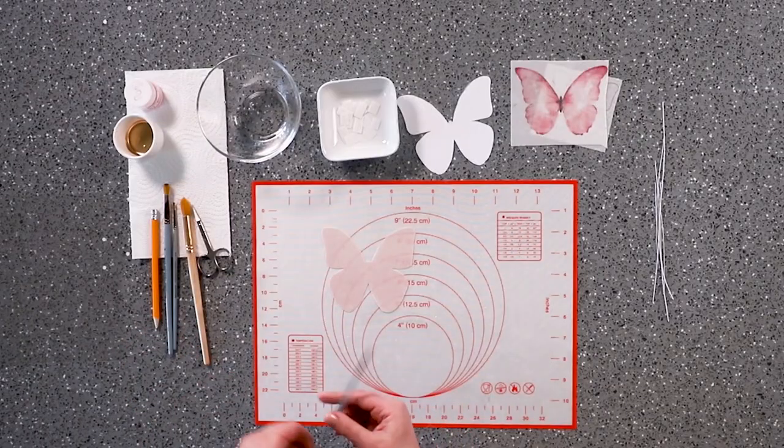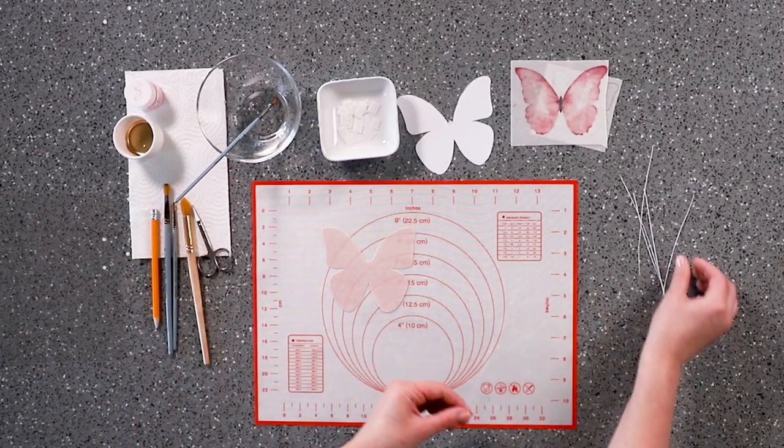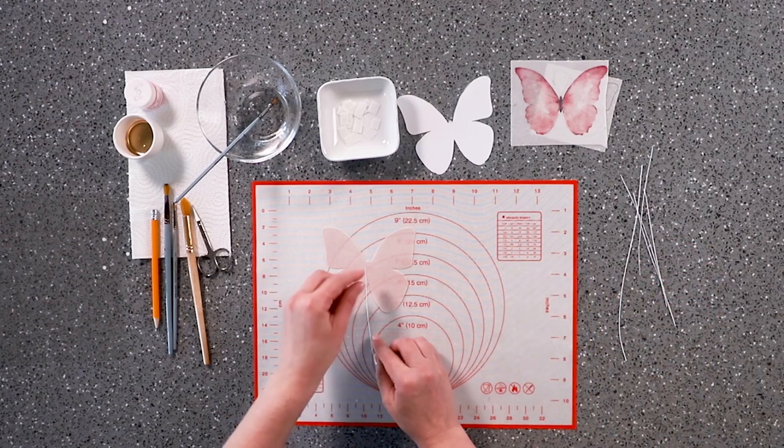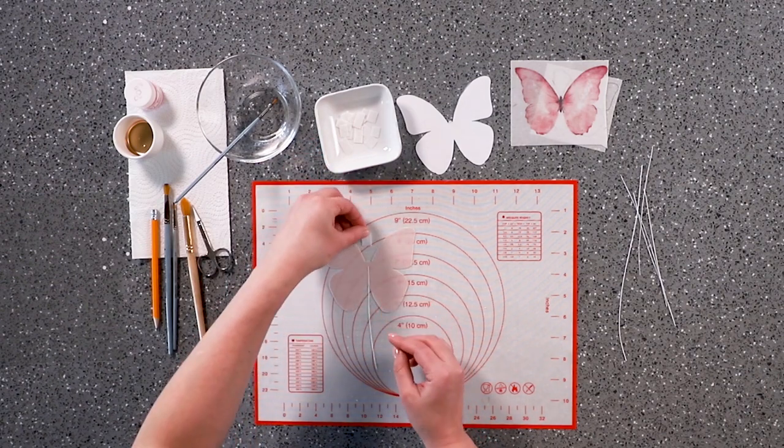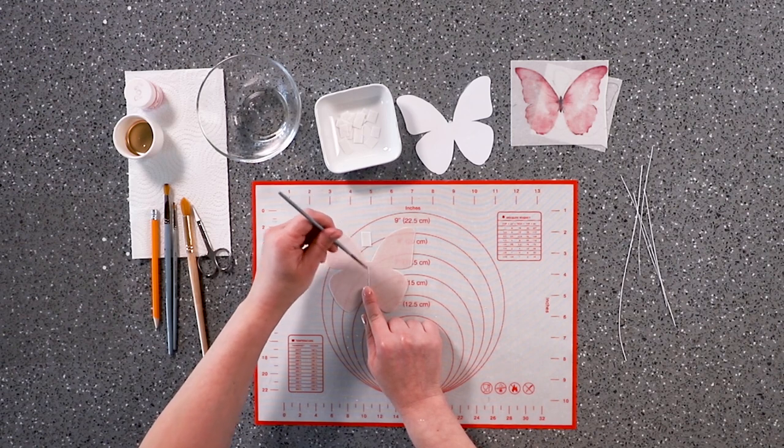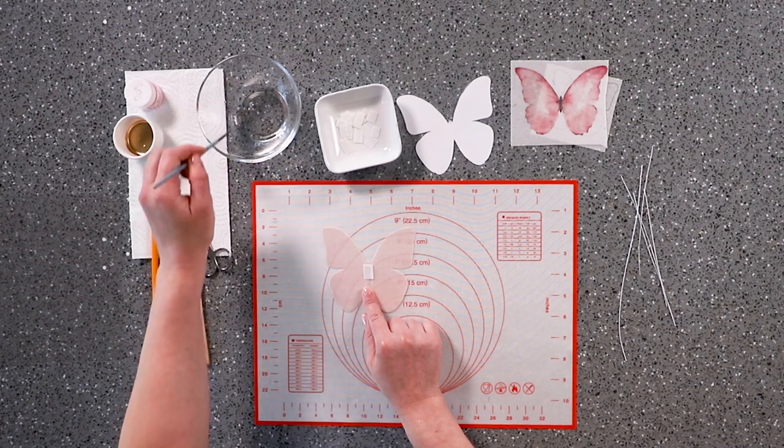We prefer to glue the butterfly and wire together with vodka. Other liquids, even water, can make the paper melt or crack. Place the wire on the back side of the butterfly and wet it with vodka. Then glue the patch and go through it again with vodka.